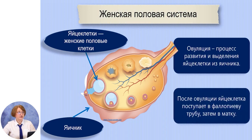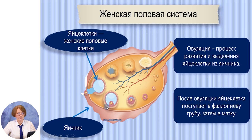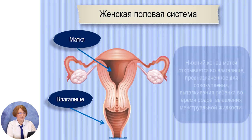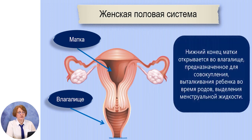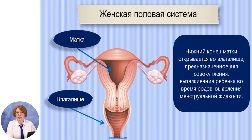Яйцеклетки созревают в яичниках. Здесь мы видим увеличенную схему яичника в разрезе. Процесс развития и выделения яйцеклетки из яичника называется овуляция. После овуляции яйцеклетка поступает в фаллопиеву трубу, а затем в матку. Нижний конец матки открывается во влагалище, которое предназначено для совокупления, выталкивания ребёнка во время родов, а также выделения менструальной жидкости.